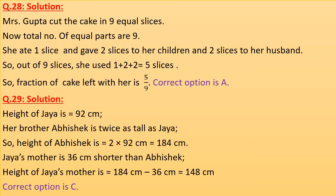Question 29 solution. Height of Jaya is 92 cm. Her brother Abhishek is twice as tall as Jaya, so height of Abhishek is 2 × 92 = 184 cm. Jaya's mother is 36 cm shorter than Abhishek, so height of Jaya's mother is 184 − 36 = 148 cm. Correct option is C.